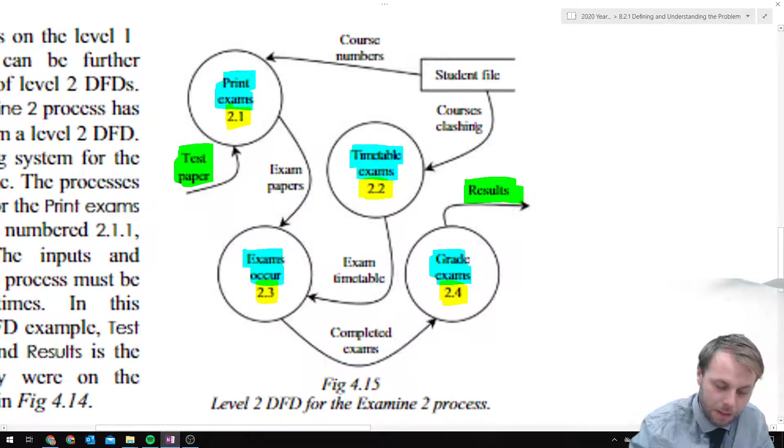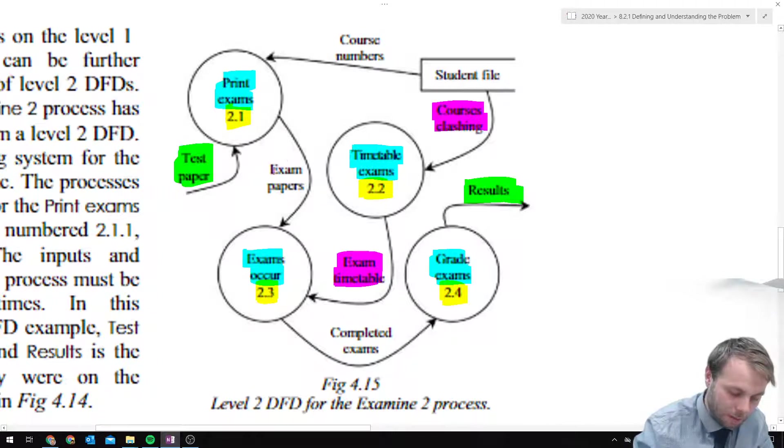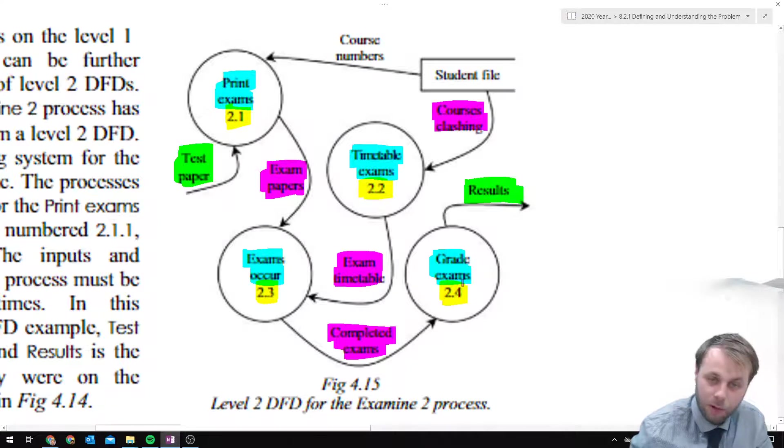Now just like a level 1 data flow diagram, we need to describe the data that moves between the processes. From our data store we can see courses clashing coming into the exam timetable exams process, and we can see that an exam timetable is being produced and given to the exam occurs process. From the print exams we can see the exam papers. From the exams occur, the completed exams are produced, then the grade exams process looks after it and produces some results. And from our data store as well, we can see the course numbers being passed to the print exams.